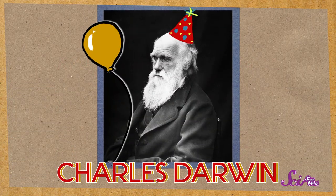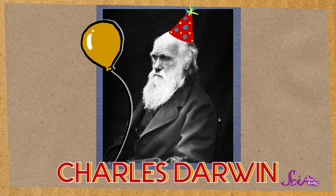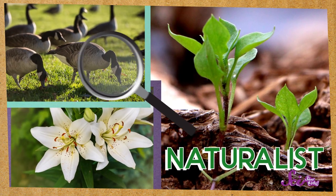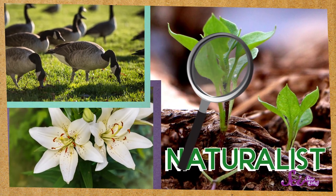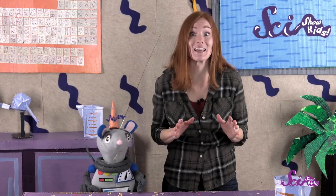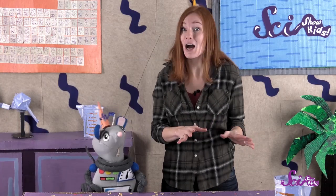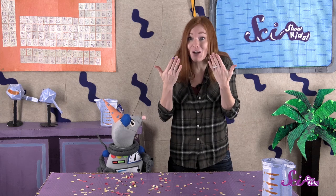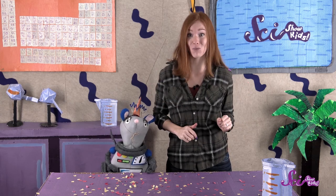Charles Darwin was the kind of scientist we call a naturalist. A naturalist is someone who studies plants and animals as they live in nature. Naturalists don't usually do experiments like other kinds of scientists do. Instead, they simply observe, or use their eyes to look around them and learn about the natural world.